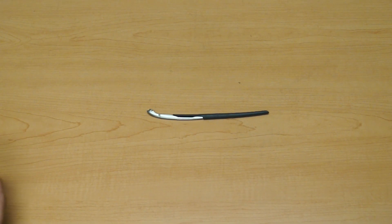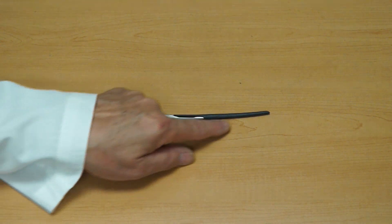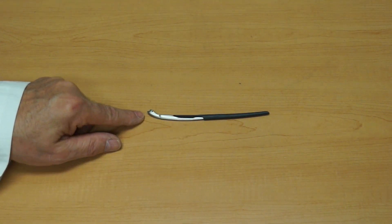Changing the temple on the Rudy Project Rydon frame. What you will receive is a full temple with the hinge piece.